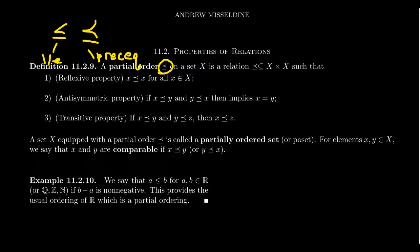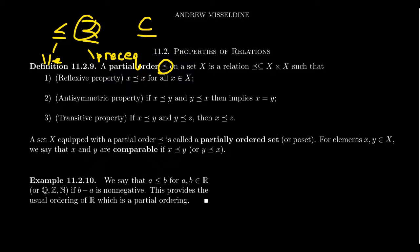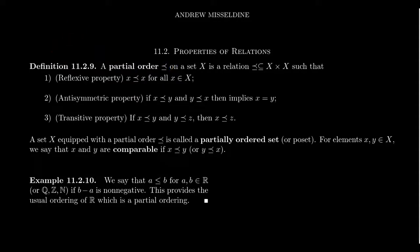Some other partial orders we'll see in a moment, like the set containment symbol, very much resemble this symbol as well. We're going to use this symbol for a bit as a generic partial order, because it's by analogy a generalization of the less-than-or-equal-to symbol. A relation is called a partial order if it satisfies the following three properties that a relation can sometimes satisfy.